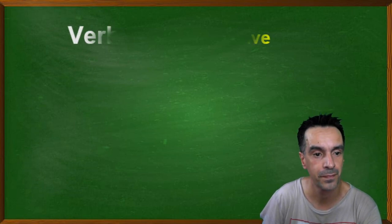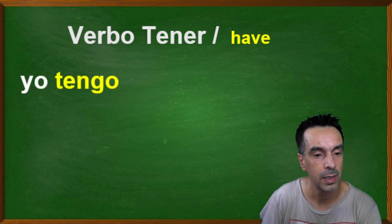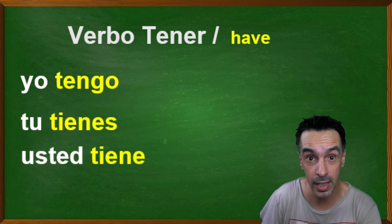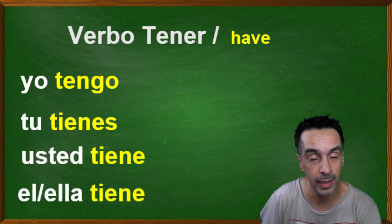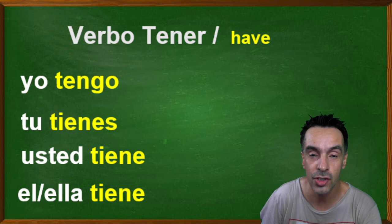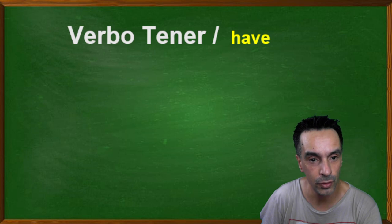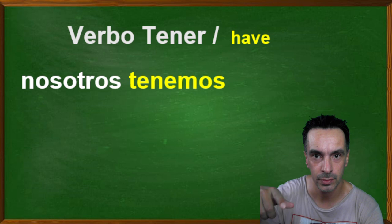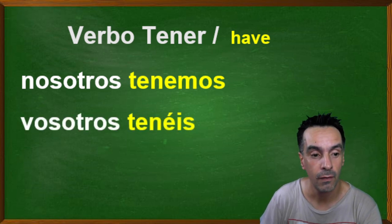Verbo tener — how do we conjugate verbo tener? Yo tengo, tú tienes, usted tiene, él/ella tiene. I have, you have, you have in a more polite way, he/she has.